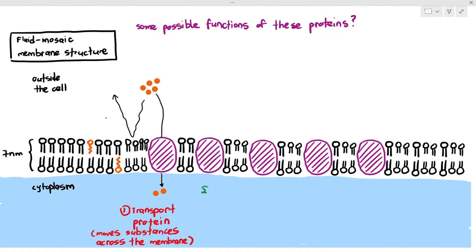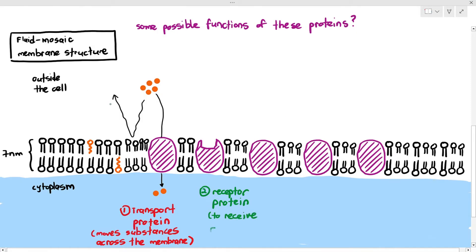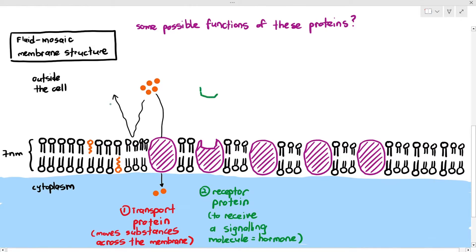Another function of membrane proteins is they can act as receptor proteins. A receptor protein receives a signaling molecule, for example hormones. Hormones travel in the blood from one organ to another as a way for different parts of the body to communicate. When a hormone travels to a cell, it binds to the receptor protein, and the hormone and receptor protein have complementary shapes so they can bind to each other.